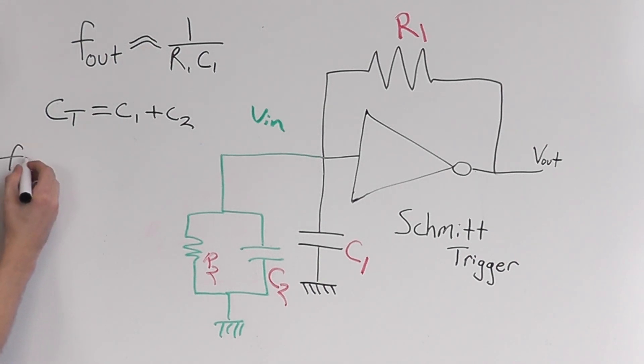Now for the Schmitt trigger the frequency is going to be about 1 over RC. But when we add this extra probing that's going to be this loading effect this is going to be R1 times C1 plus C2. Now let's go demonstrate this on an oscilloscope by actually visually seeing the effects of this capacitance loading.